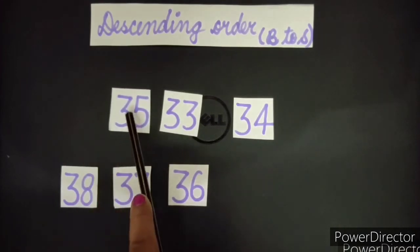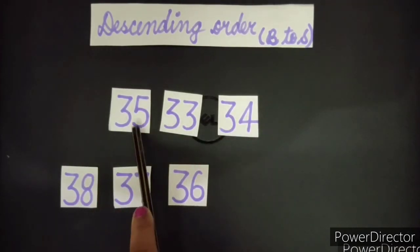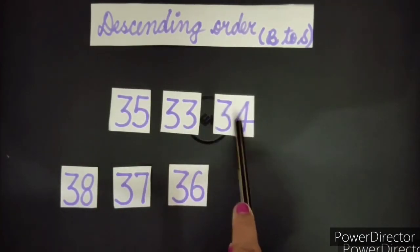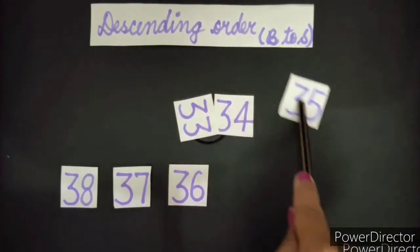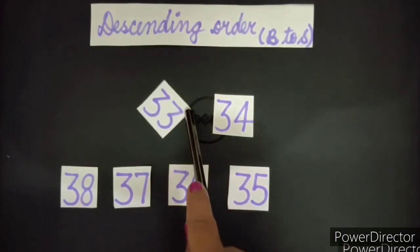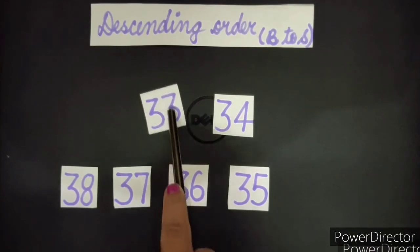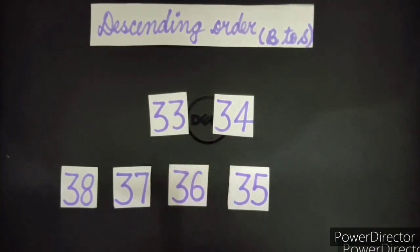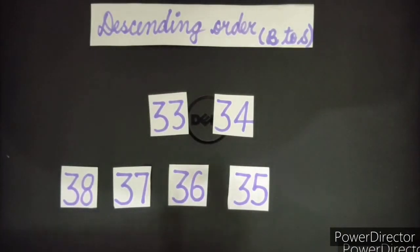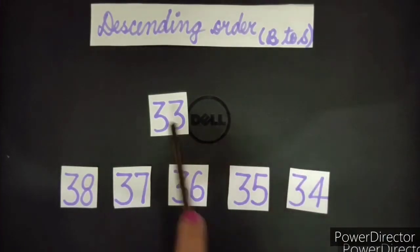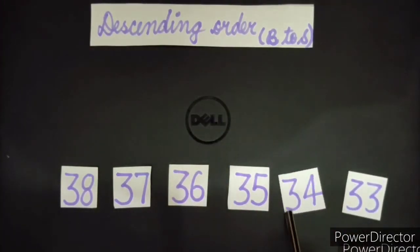Now among these three. 35, 33, 34. Which one is greatest? This 35 is greatest. Right? Now among these two. Which one is bigger? Which one is greater number? Yes, 34 and at last 33 will come.